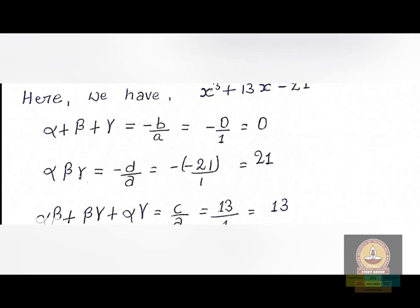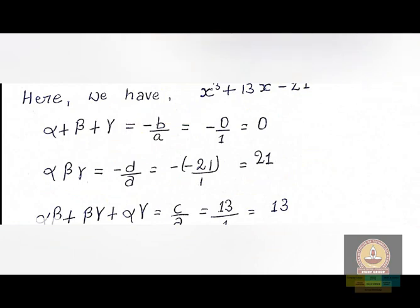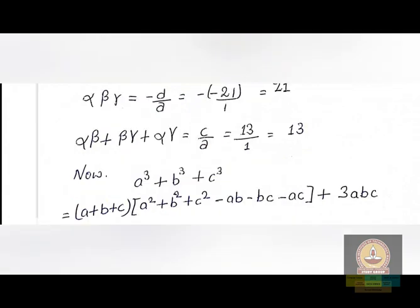Then we have alpha·beta·gamma = −d/a. We have two minus signs that combine to give a plus sign, so the product of roots is +21. For alpha·beta + beta·gamma + gamma·alpha = c/a = 13/1 = 13.